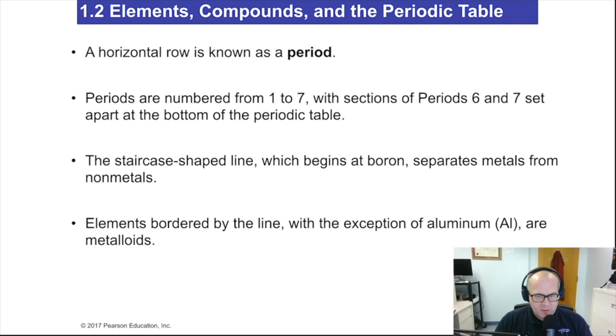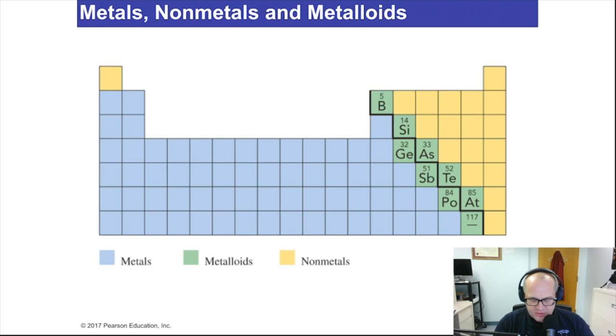A staircase-shaped line which begins at boron, separates metals from non-metals. And the elements that are bordered by the line, with the exception of aluminum, are your metalloids. There's our metalloid line. So here's the staircase again. Notice how aluminum is not listed as a metalloid. Aluminum is most definitely a metal. Above and below the staircase, these are metalloids except for aluminum.